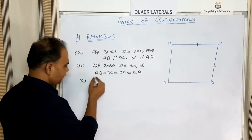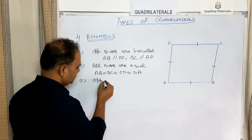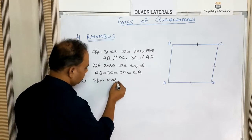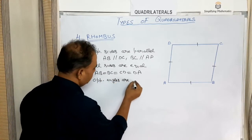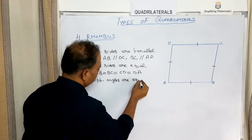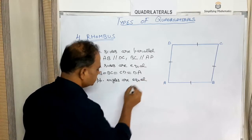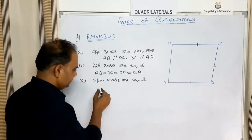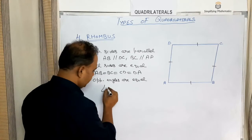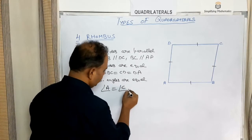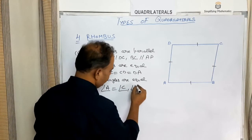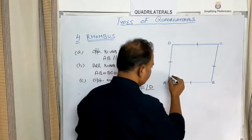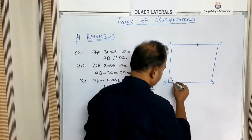The third property of a rhombus is that opposite angles are equal — angle A equals angle C, and angle B equals angle D.